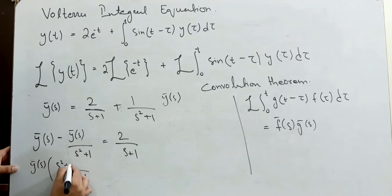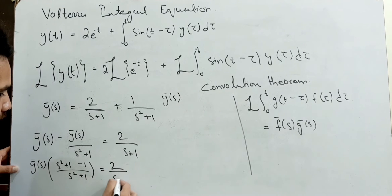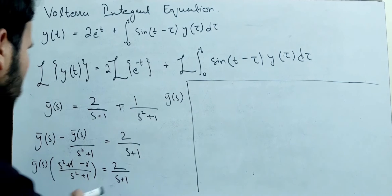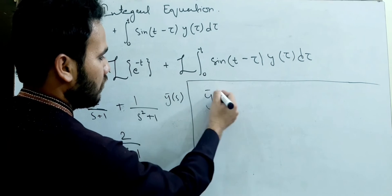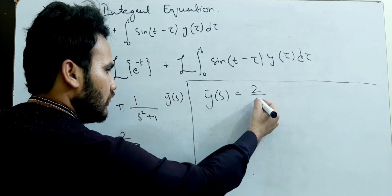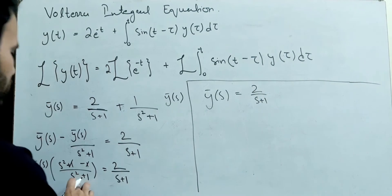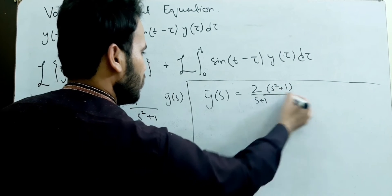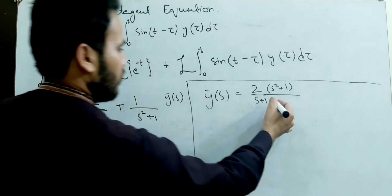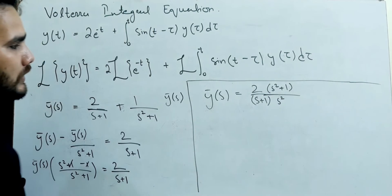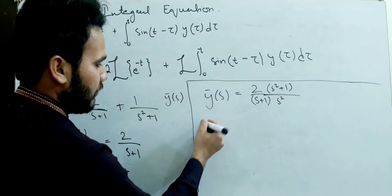Simplifying: y̅(s) times [1 minus 1/(s² + 1)] equals 2/(s + 1) plus 1 minus 1. After algebraic simplification using (s² + 1), we solve for y̅(s). Now applying the inverse Laplace transformation.